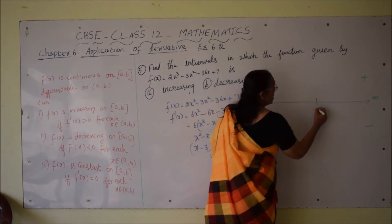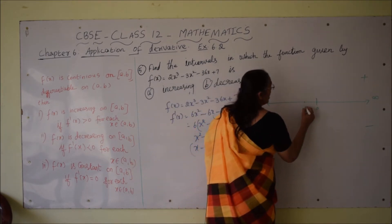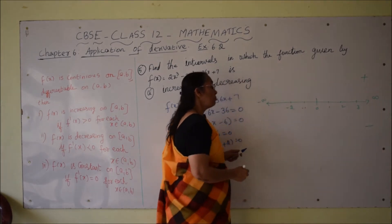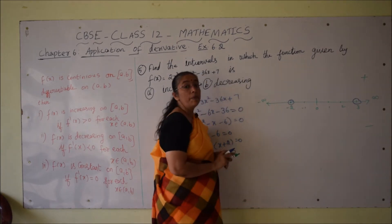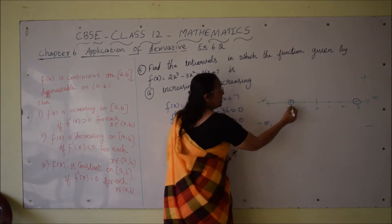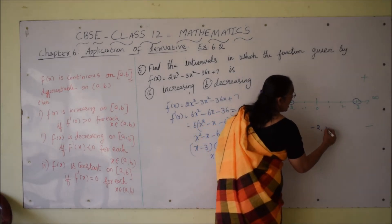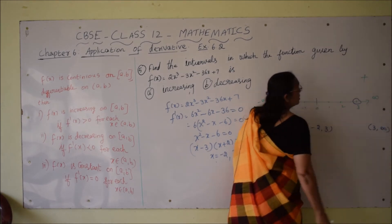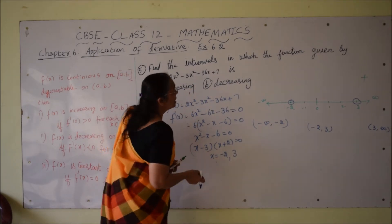Taking 0 as origin, the turning points are -2 and 3 marked on the number line. The whole real number system is divided into 3 intervals: from minus infinity to -2 is the first interval, from -2 to 3 is the second interval, and from 3 to infinity is the third interval.